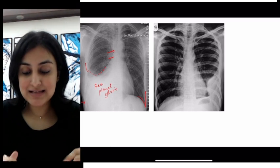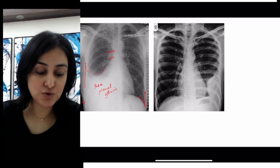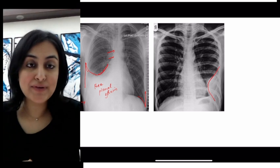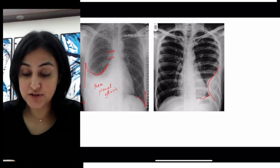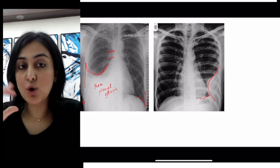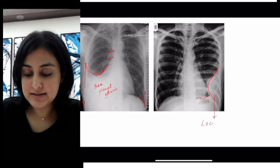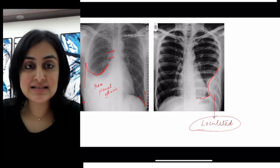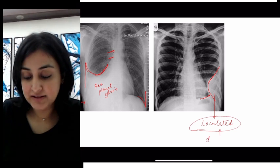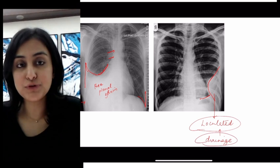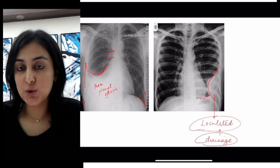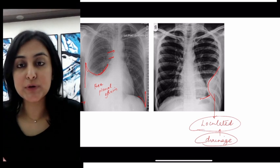On the other hand, when we see an image where the lateral margin is not the highest point and it is not forming a meniscus — instead showing a well-defined convex opacity with CP angle blunting — but it is not conforming to the laws of gravity, this is a loculated effusion. It means there are adhesions; it's a complicated effusion. These usually need pigtail drainage, placed under ultrasound guidance.